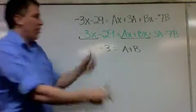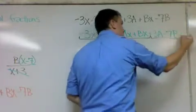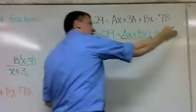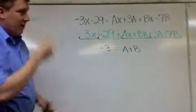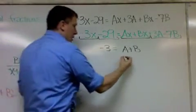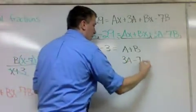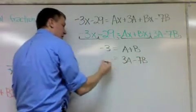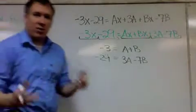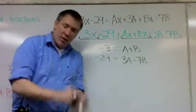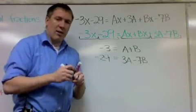Well, that just leaves the numbers. The 3a minus 7b have to make negative 29. And so I'm going to just write that. 3a minus 7b have to equal negative 29. And right now I have a system of two equations. I have two variables, two equations I can solve.